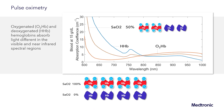In pulse oximetry, we typically measure a percentage that is a mixture. Here we are showing 50% arterial oxygenation, which would be 50% oxygenated hemoglobin and 50% deoxygenated hemoglobin. The absorption spectra for this mixture is half of the oxygenated absorption and half of the deoxygenated absorption.